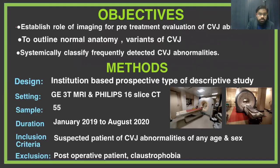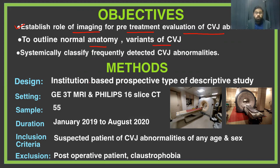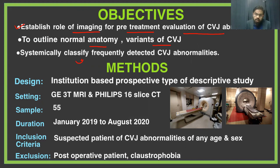The objectives of our study are: first, to establish the role of imaging for treatment evaluation of CVJ abnormalities; second, to outline the normal anatomy as well as the variants commonly seen in the CVJ; and third, to systematically classify the frequently detected CVJ abnormalities. When we did our literature review, we did not find sufficient material on this topic, so our study adds value to the literature and provides insight into the sociodemographic profile of patients affected by CVJ abnormalities.